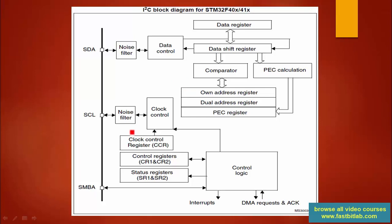The SCL pin is connected to the clock control block, which is controlled by the CCR (Clock Control Register). You have to configure the clock control register in order to produce different frequencies on the serial clock pin, and we will explore the clock control register in detail later.